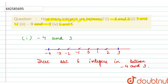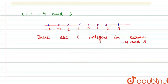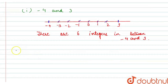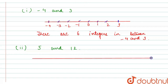I hope the first part is clear. Let's proceed with the second part of the question, which is 5 and 12. Both are positive numbers. Since both the numbers are positive, we will be drawing an integer line but considering only the positive numbers. So let it be 0 here, and on the left side there are negative numbers.